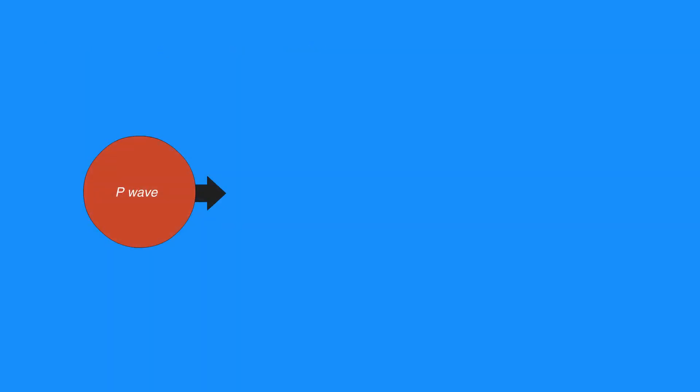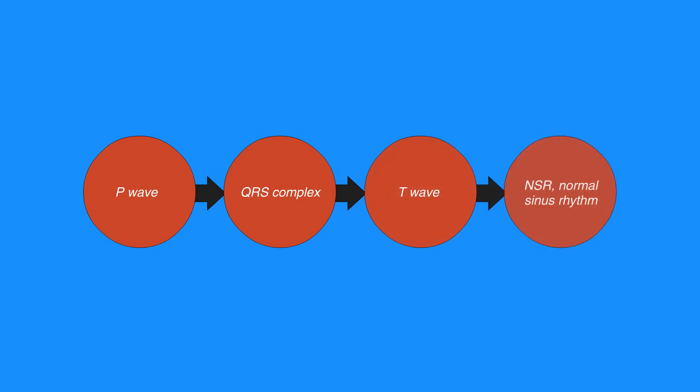The P wave, QRS complex, and T wave, together at proper intervals, are indicative of normal sinus rhythm, or NSR.